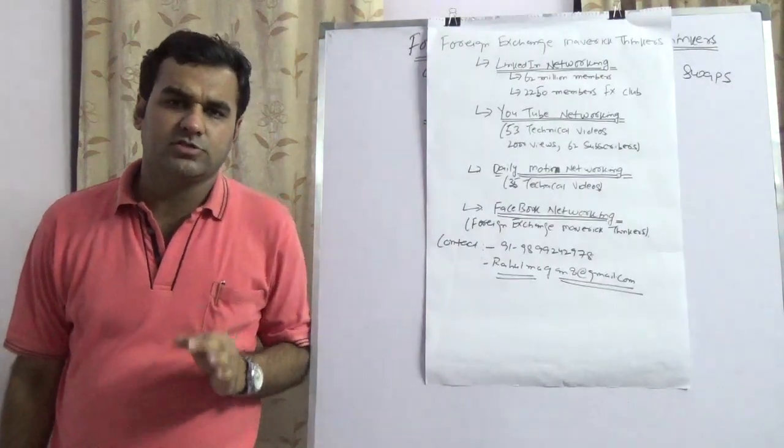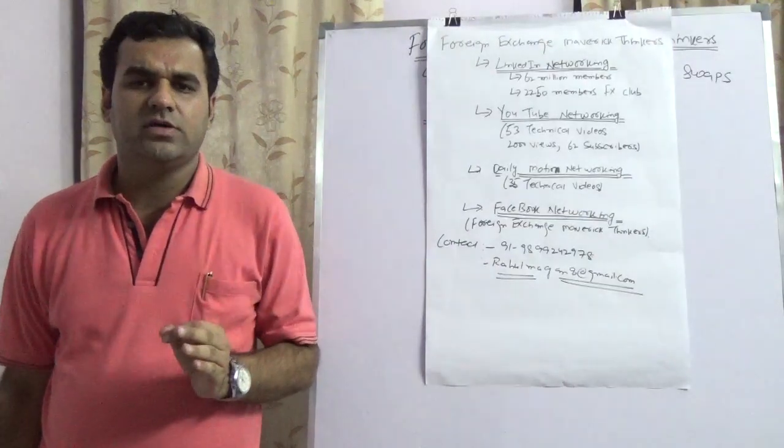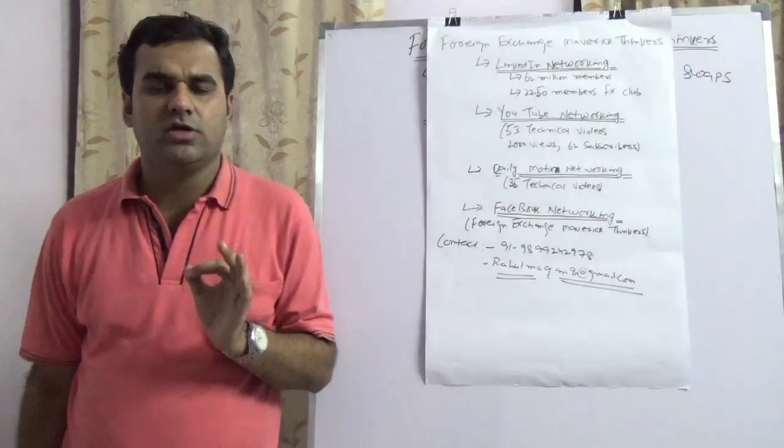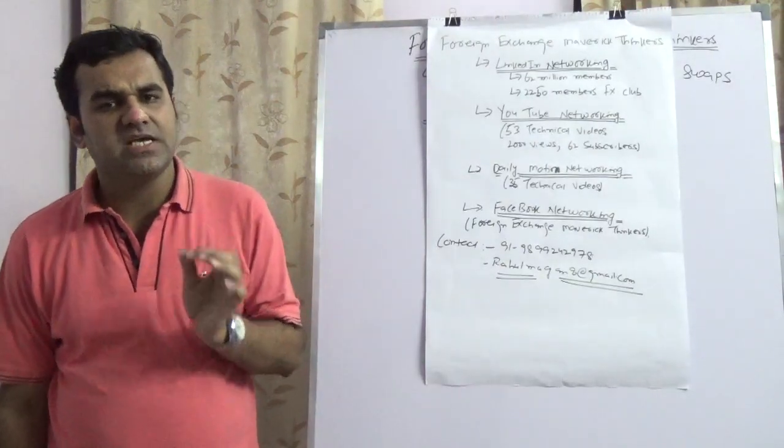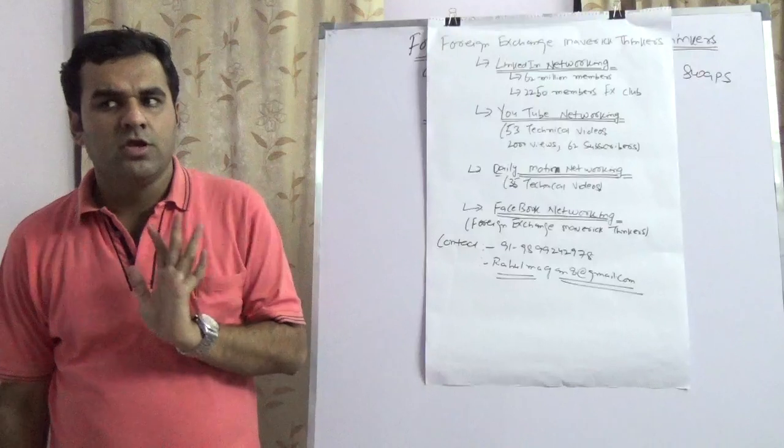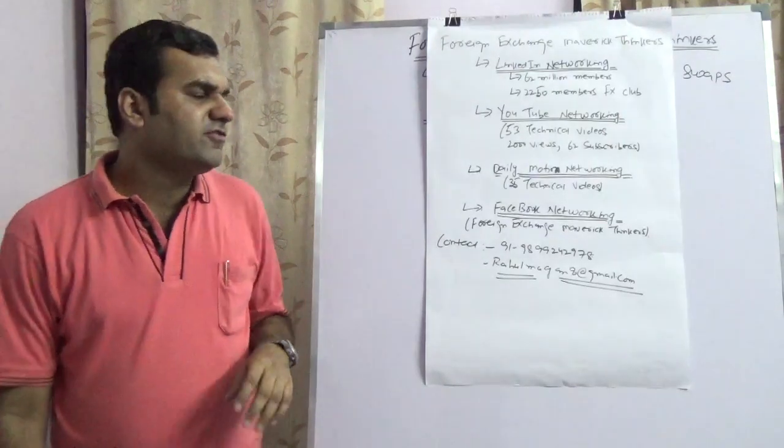TRS stands for total return swap. In the last two videos we had a word about single asset total return swap and multiple asset total return swap. But today we are going to speak about OIS on single asset total return swap. You can have OIS on multiple asset total return swap as well.